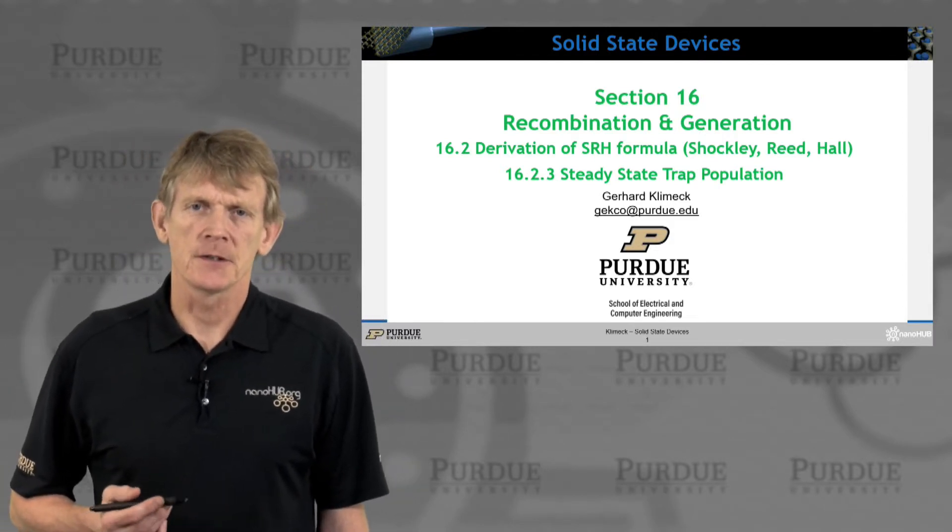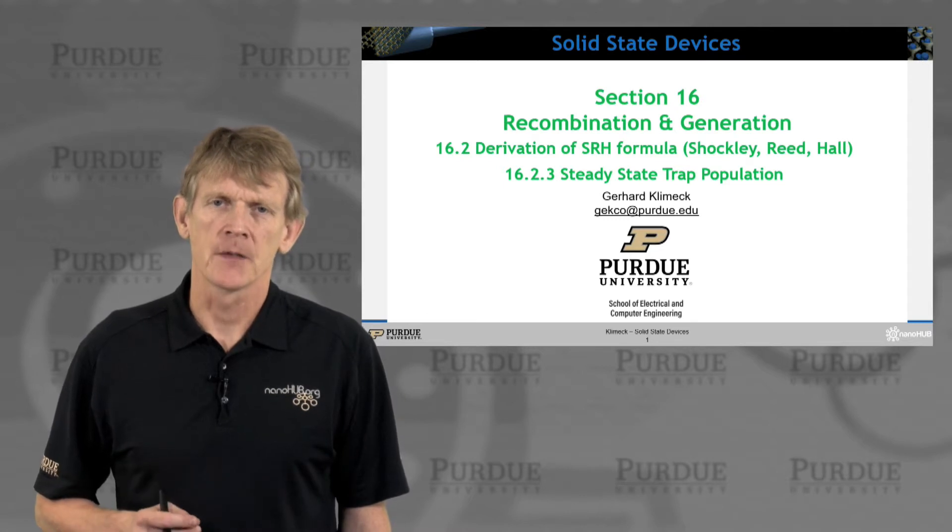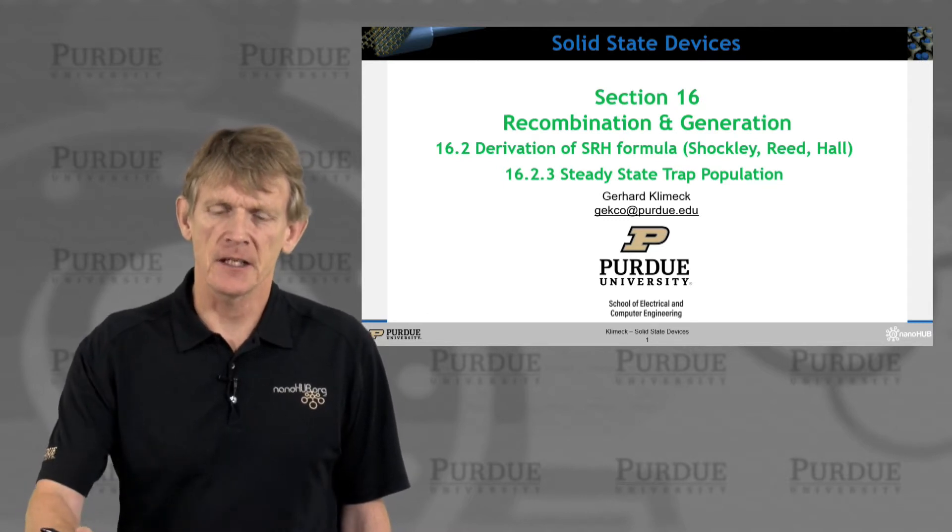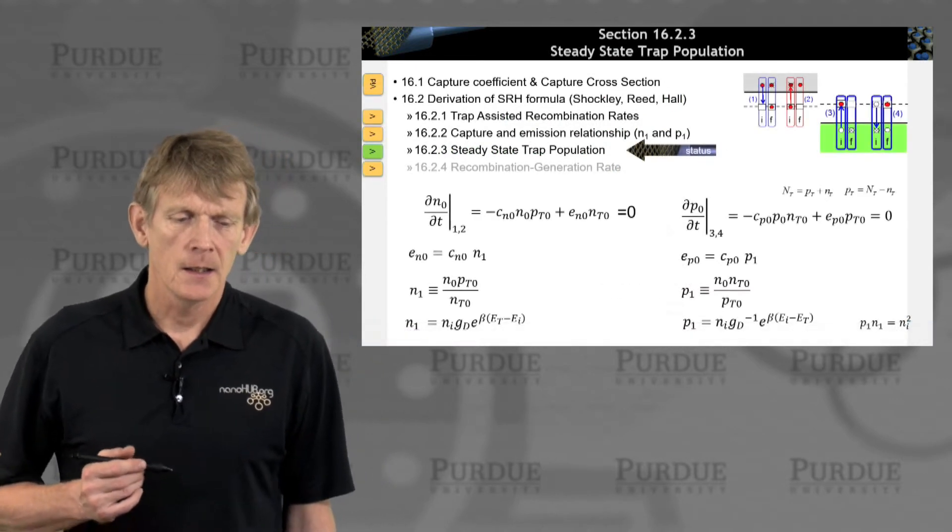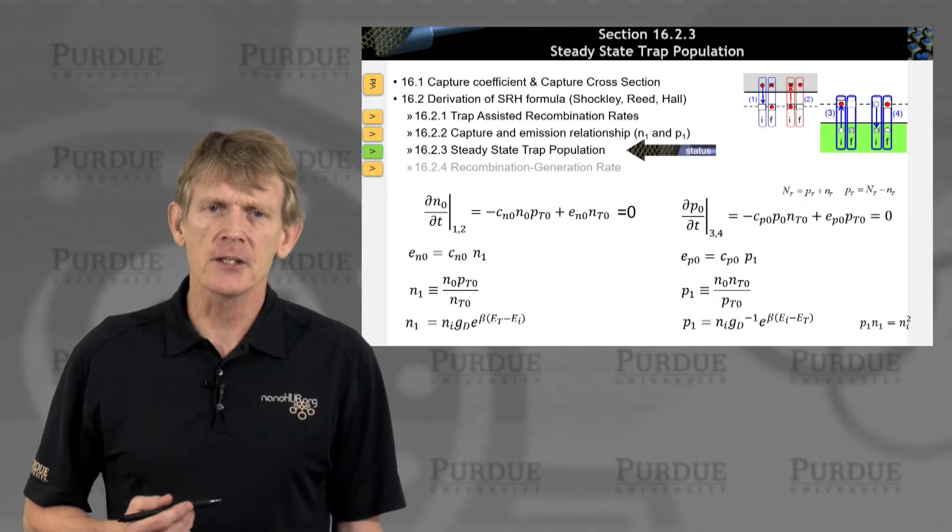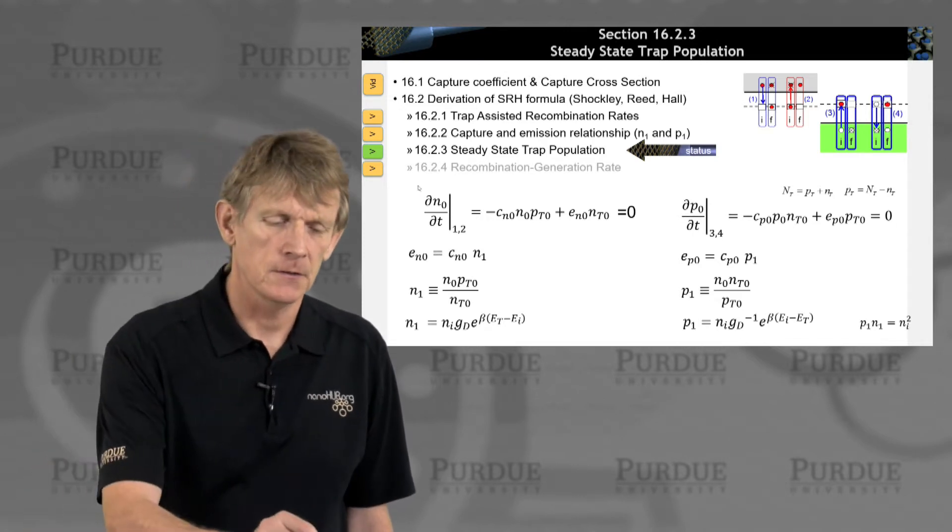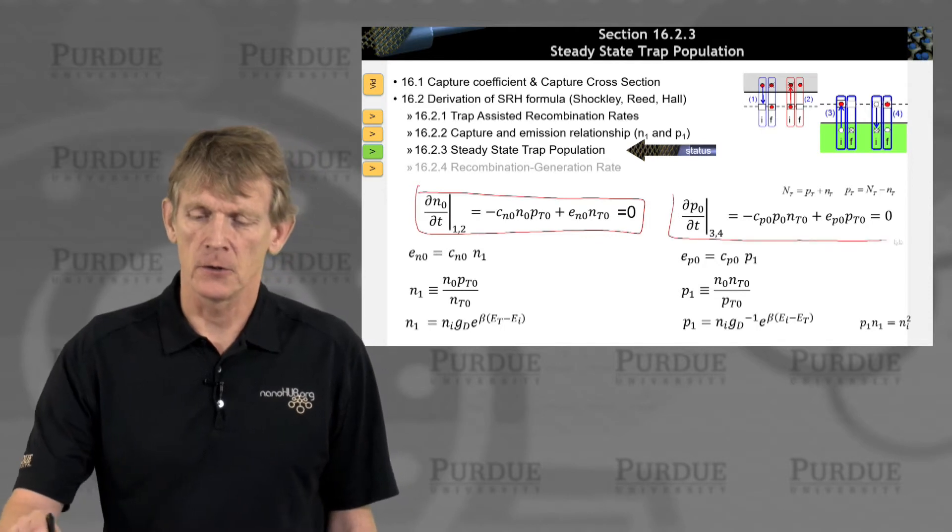Let's look at the third step for the derivation of the Shockley-Reed Hall expression. We're going to look at steady-state trap population. In the previous sections, we calculated the recombination rates, which is this expression here for the electrons and for the holes.